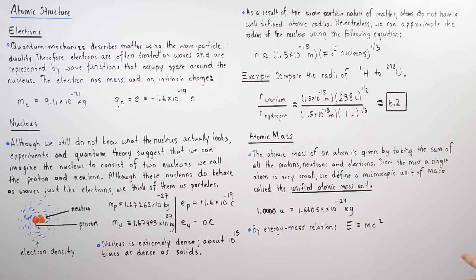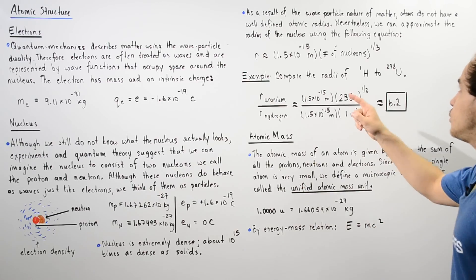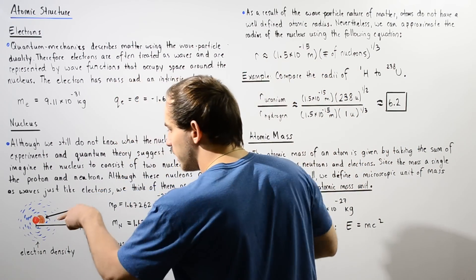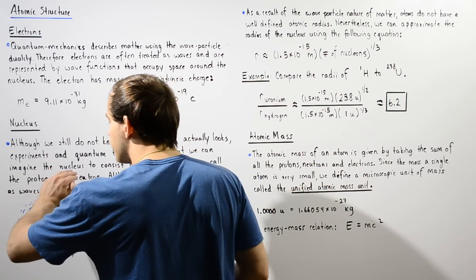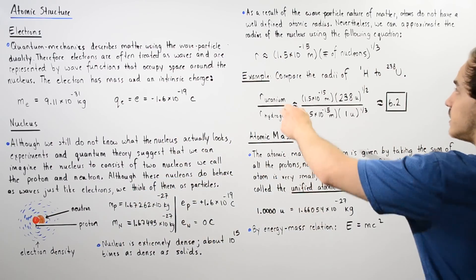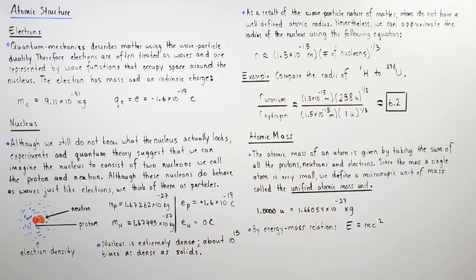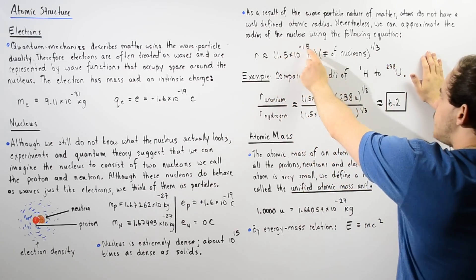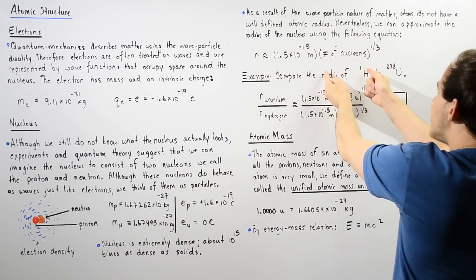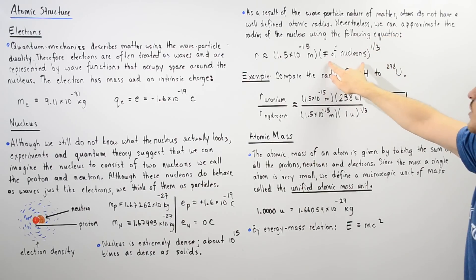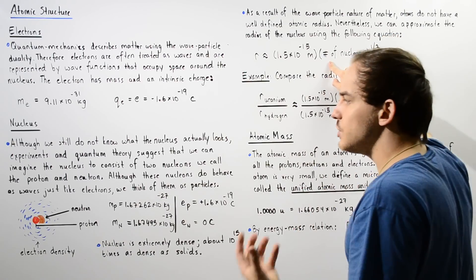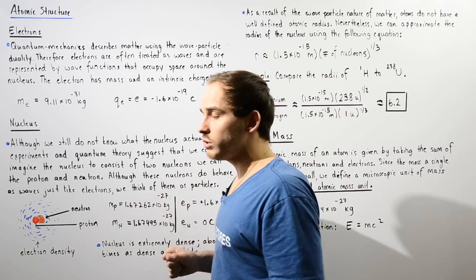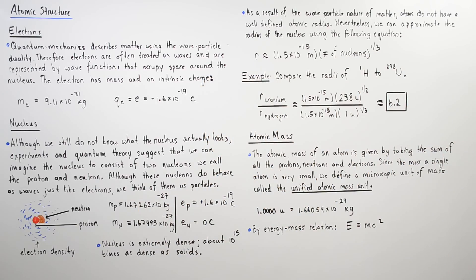Nevertheless, we can still approximate the radius of the nucleus using the following equation. We can imagine that the radius begins at the center of the nucleus and ends at the outer region of our electron cloud. The radius of our atom is approximately equal to the product of 1.5 times 10 to the negative 15 meters, multiplied by A to the power of one-third, where A gives us the number of nucleons inside the nucleus. So as the number of protons and neutrons in the nucleus increases, the radius of our atom also increases.